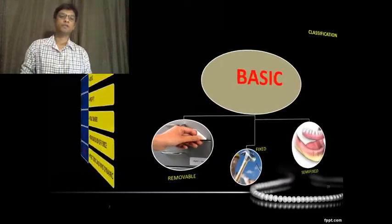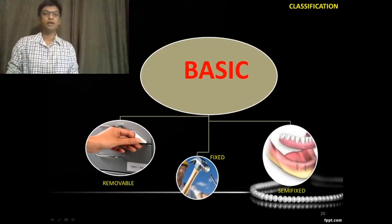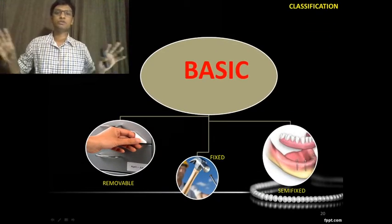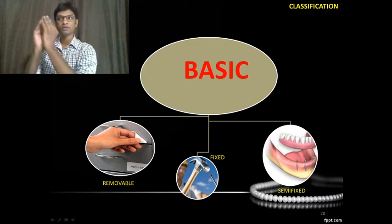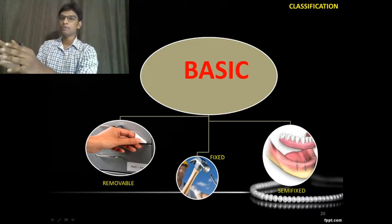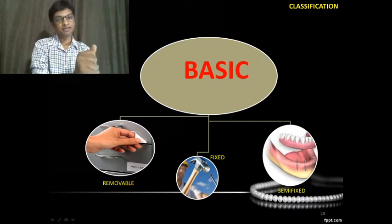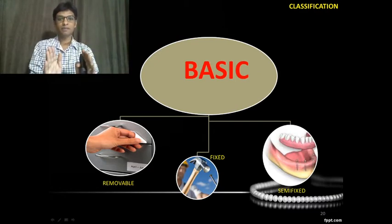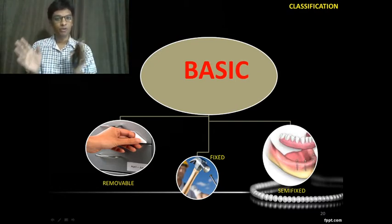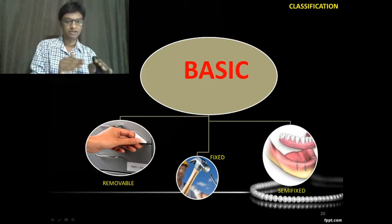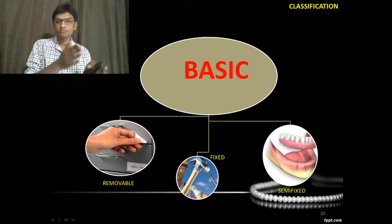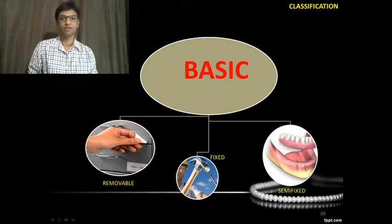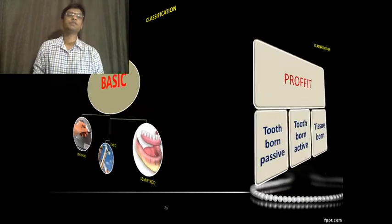The basic classification: appliances can be removable — those the patient can take out; fixed — permanently attached inside the oral cavity; or semi-fixed — a combination of both, which can be removed but stays fixed during treatment.